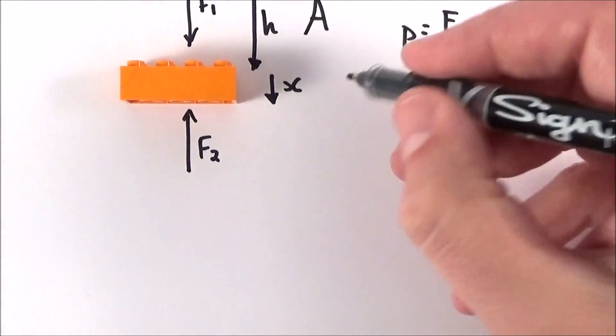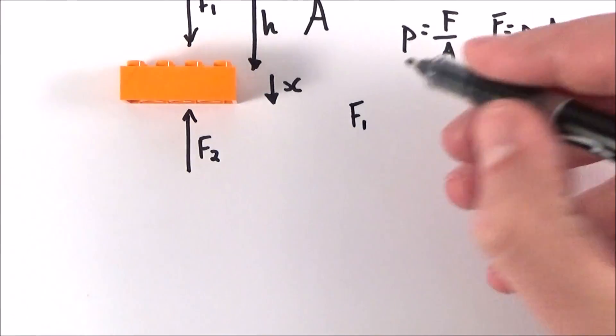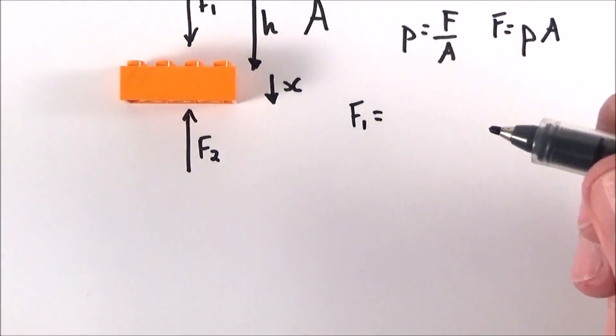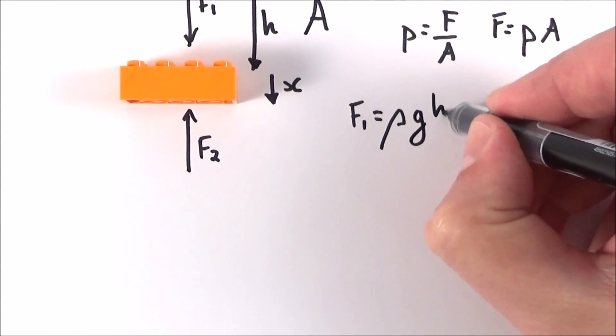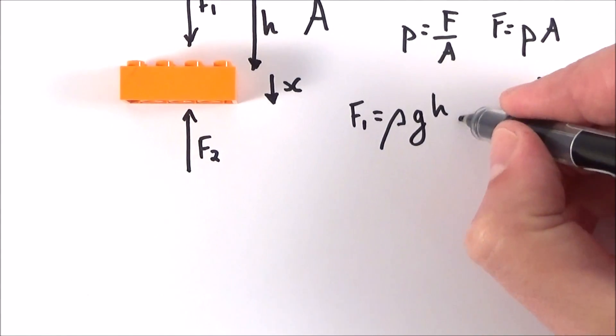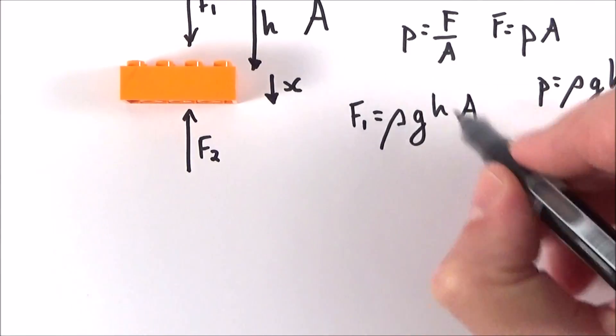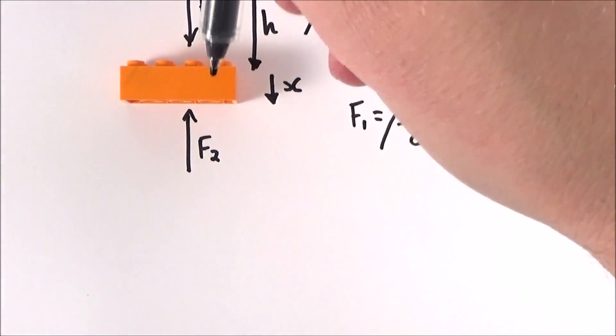Now for the force at the very top which I'm going to call F1, we need to think about the pressure at this depth. The pressure at any depth is equal to ρgh. So for force one we've got a pressure of ρgh and we multiply that by the area which is A. So this is a force acting down on the top of that block.